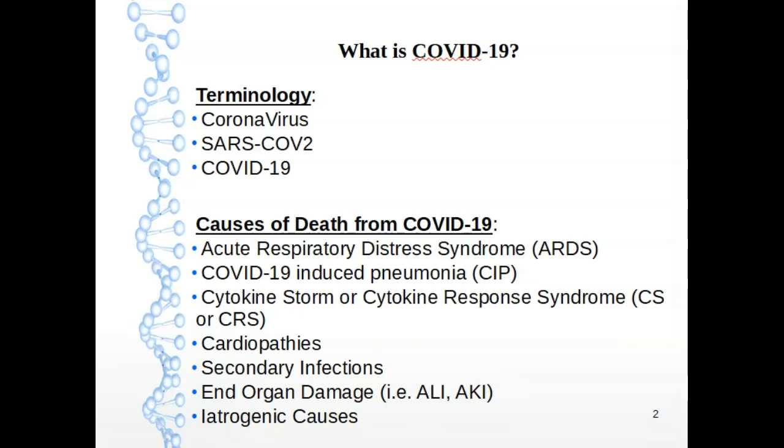You can get different types of cardiopathies or pathologies that occur to the heart. You can get secondary infections, such as pneumonia that is caused by fungi, other viruses, or other bacteria. You can also have end organ damage, like acute lung injury or acute kidney injury. And there are iatrogenic causes, which means causes from actually while you're being treated at the hospital, you can get something. There is something called ventilator acquired pneumonia, where you actually get pneumonia from the ventilator that they are giving you to help you breathe at the hospital.